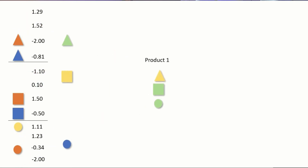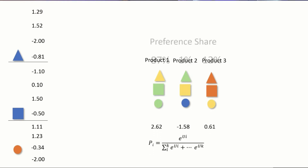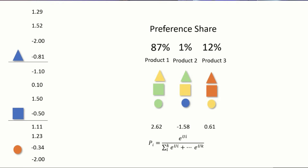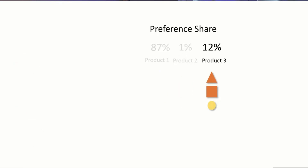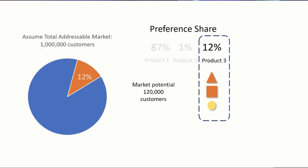If we make the assumption that the total appeal of a product is the sum of appeals of its parts, then we can construct any product from these shapes and colors and sum up these part worth utilities to get the total utility of that product — think of it as its total appeal. We can use a statistical formula to estimate how much more or less likely that particular product would be to be selected by customers than other products it may be competing against. This is called preference share, and by calculating preference share we can estimate potential demand for a new product launch.